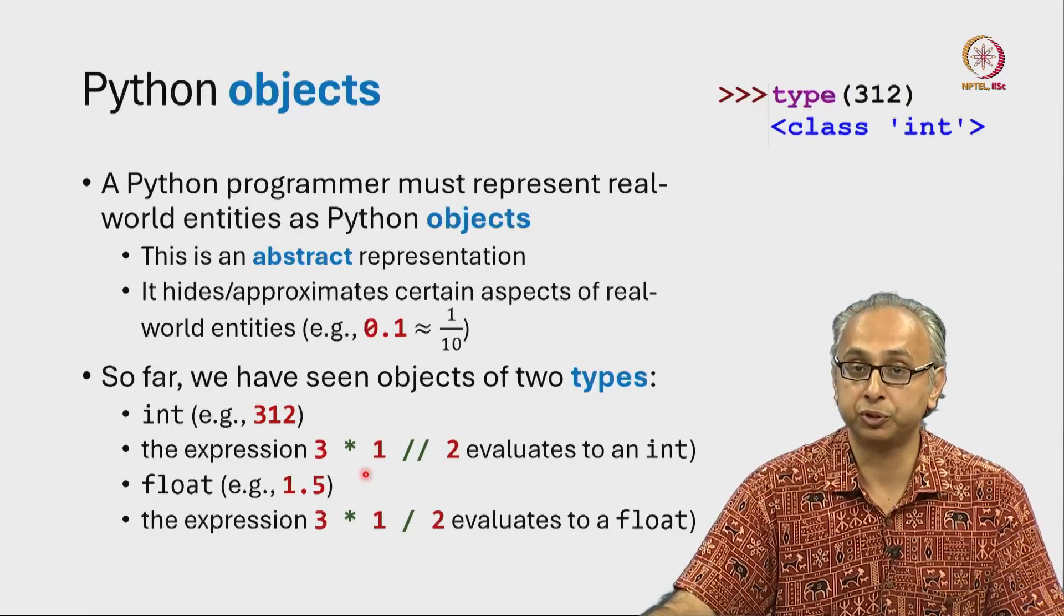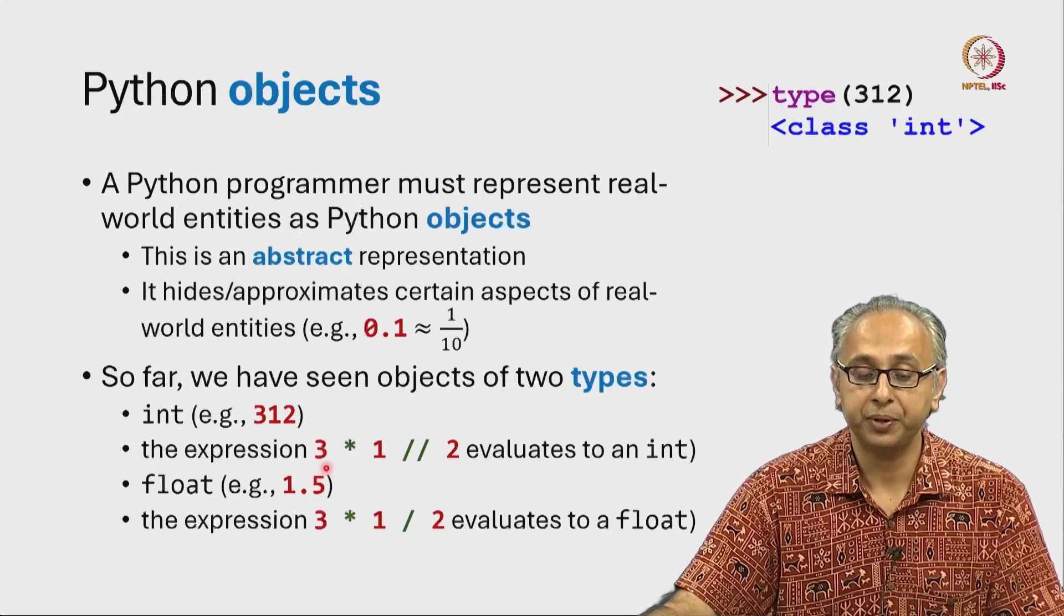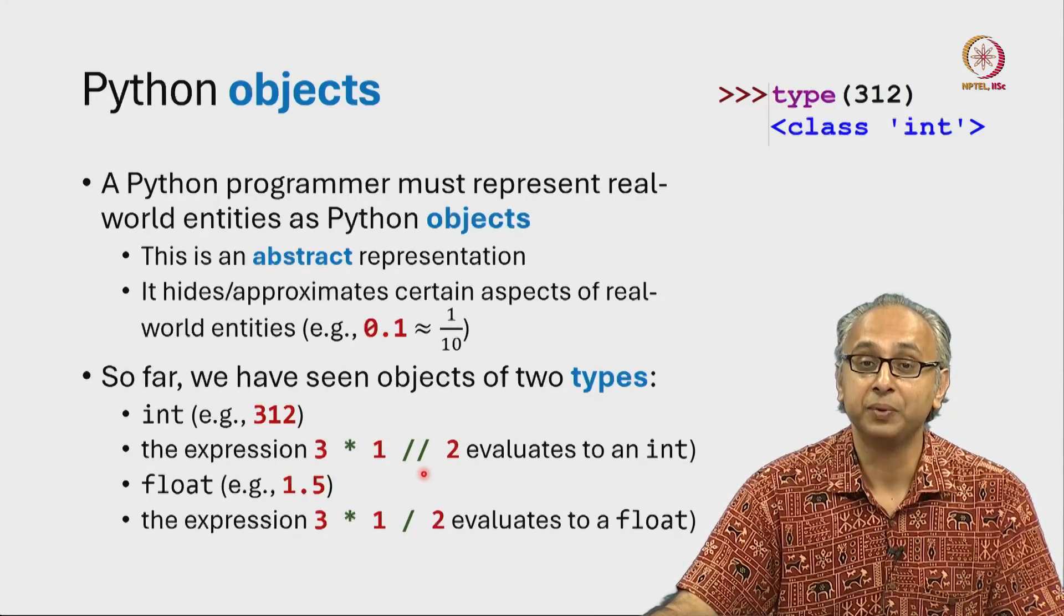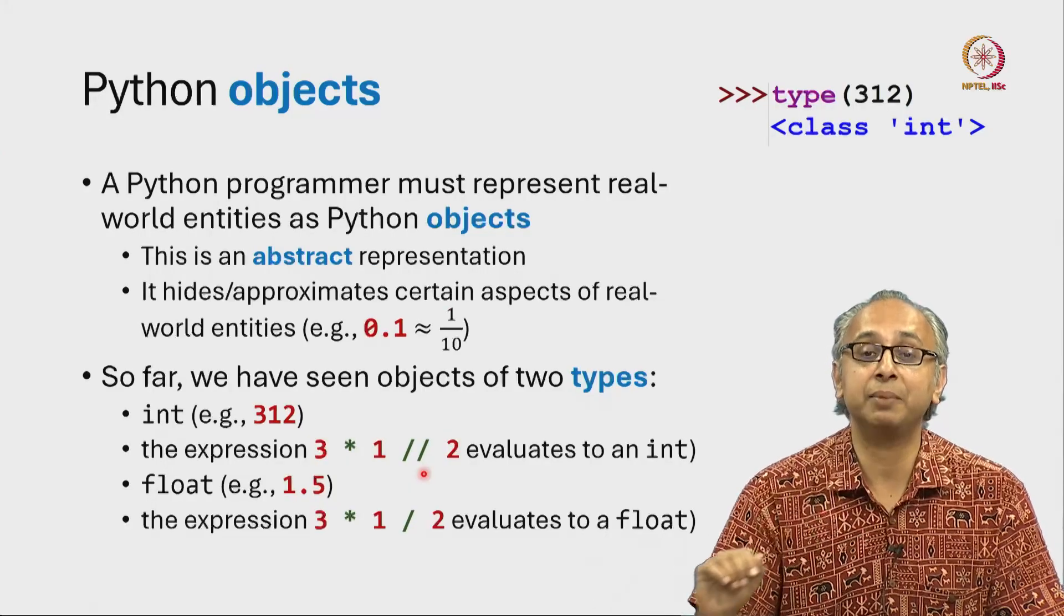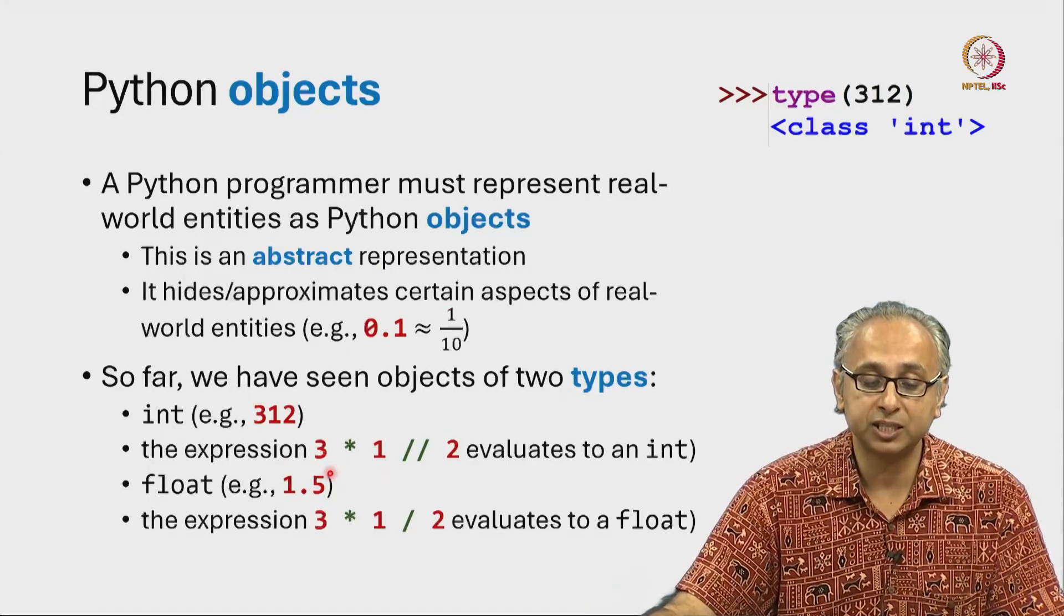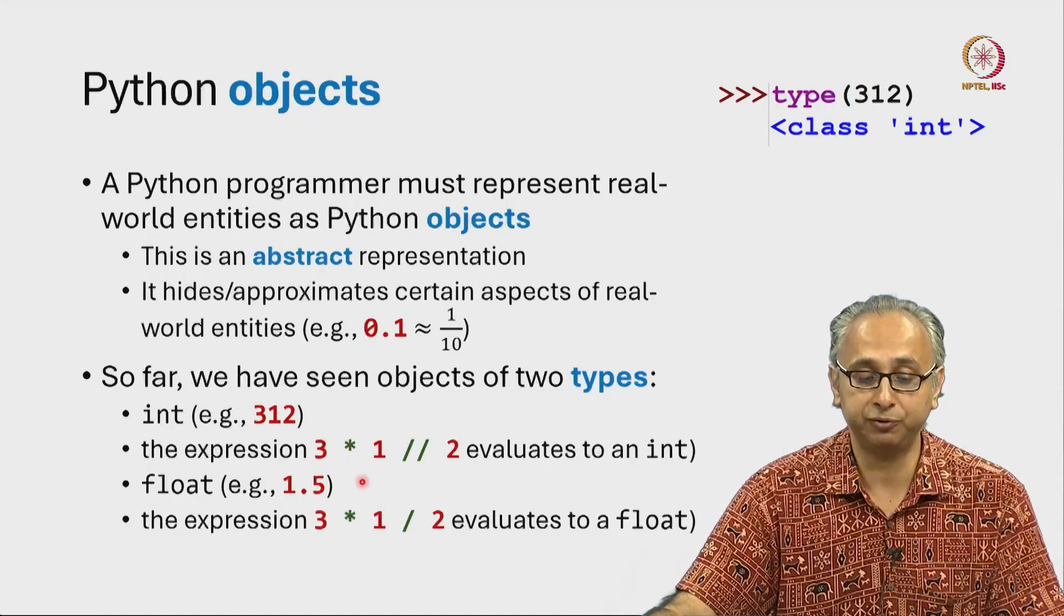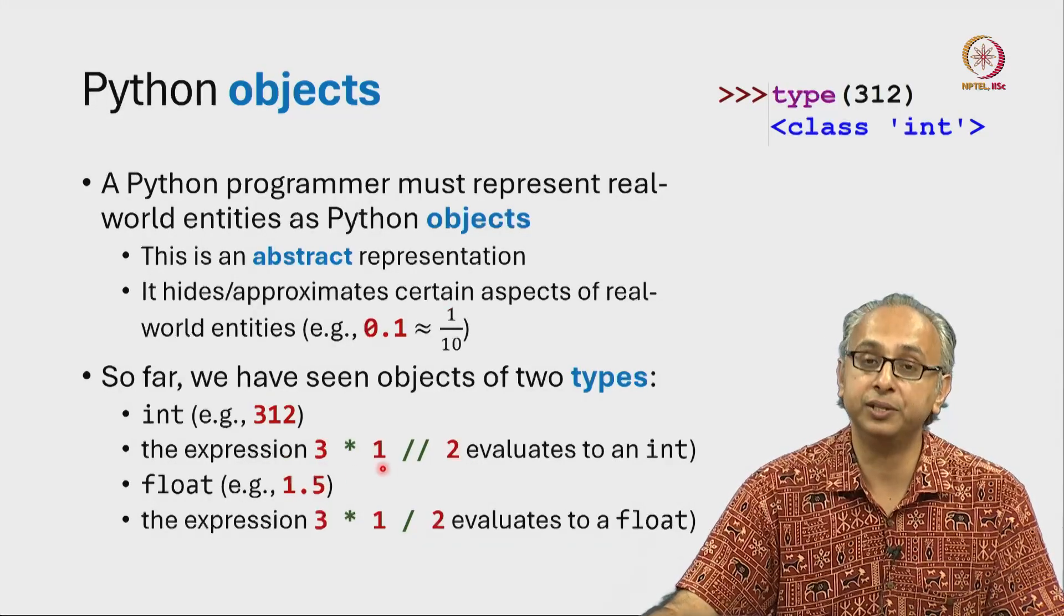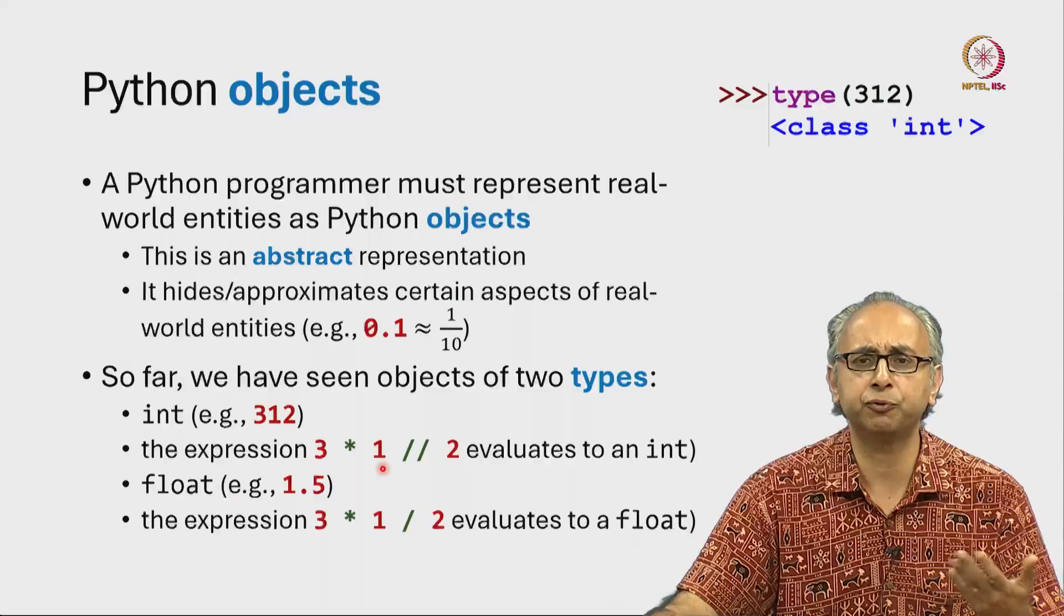Following the rules of Python, we know that star and floor division are evaluated at the same level of priority, which means this expression will be evaluated left to right. We will first multiply the integer 3 with the integer 1 resulting, of course, in the integer 3.